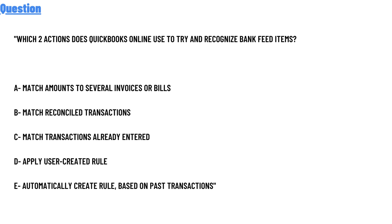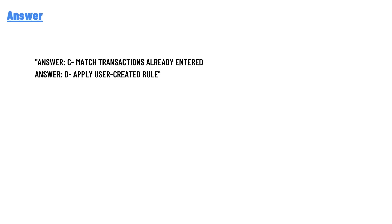Option B: match reconcile light transaction. Option C: match transactions already entered. Option D: apply user-created role. Option E: automatically create role based on past transactions. The correct answer is Option C — match transactions already entered.